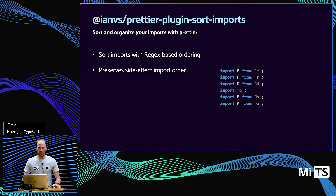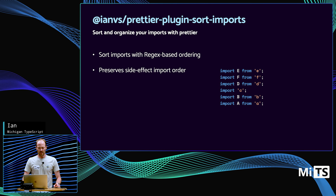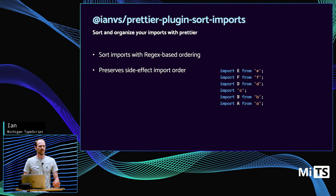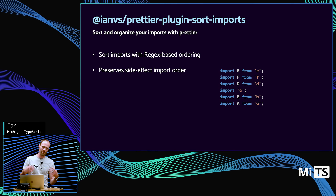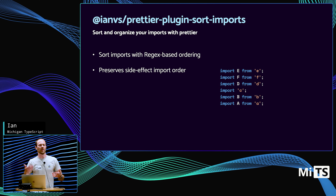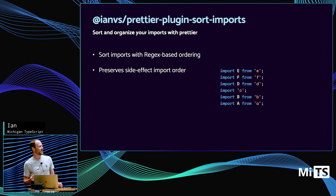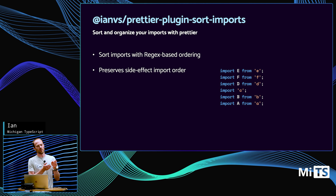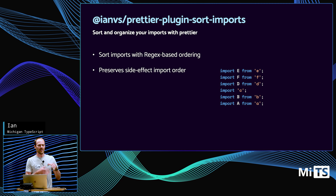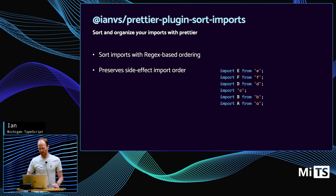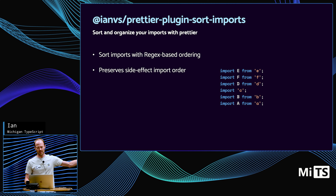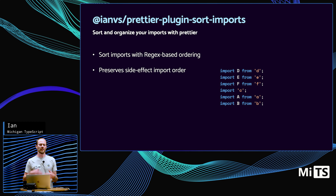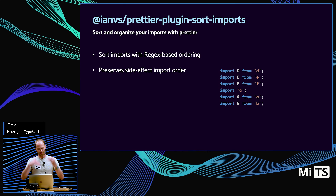One difference from other Prettier plugins is that mine preserves side effect import order. Side effects are tricky because they're often impacting global state — you're running a module and expecting it to do something. For CSS imports, the order impacts the cascade, which is important. So if you had E, F, D, B, A and then ran the plugin, it would sort the non-side-effect ones around the side effect, keeping it in place.